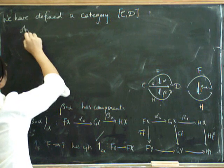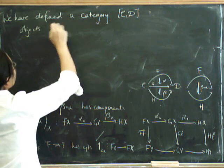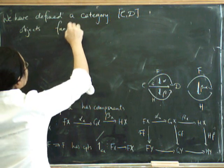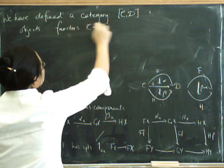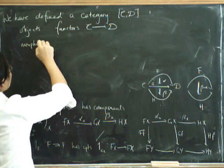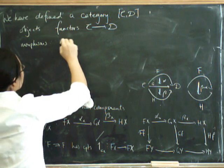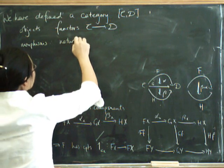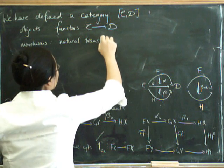The objects are functors from C to D and the morphisms are natural transformations.